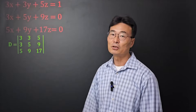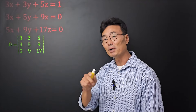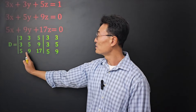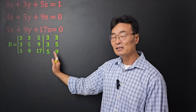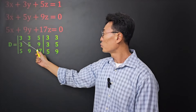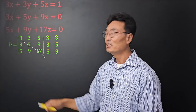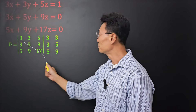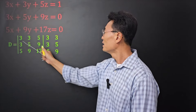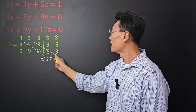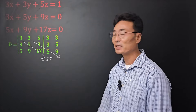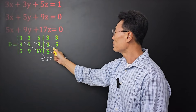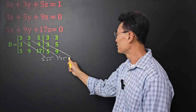To find the determinant of the matrix is quite complicated, but here's a shortcut. First, we write the first column and the second column on the right side. Then we multiply diagonally left to right: 3 times 5 times 17 is 255. Next, 3 times 9 times 5 gives 135. And 5 times 3 times 9 gives 135 again.